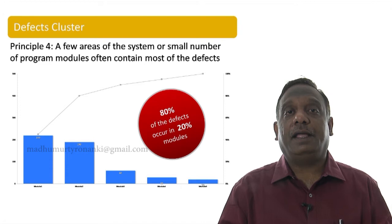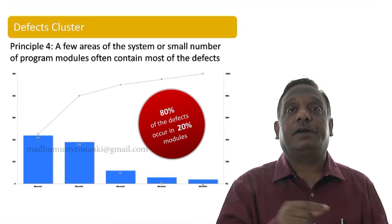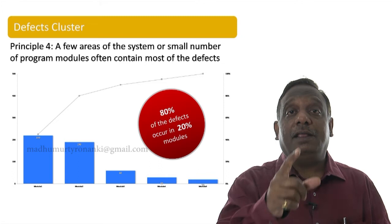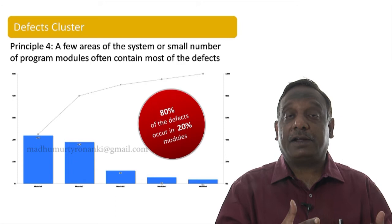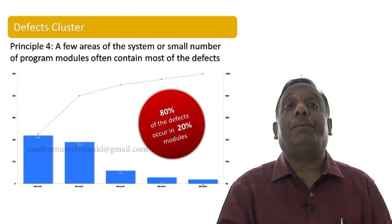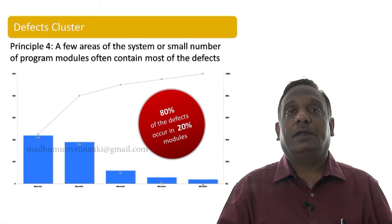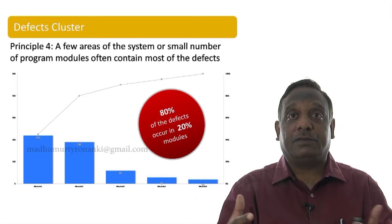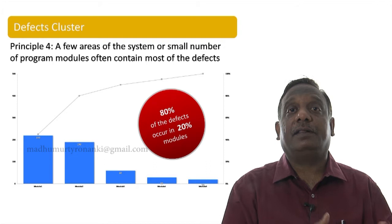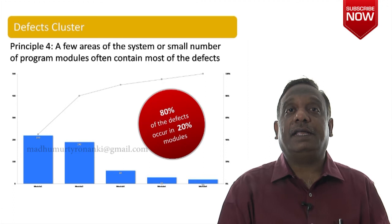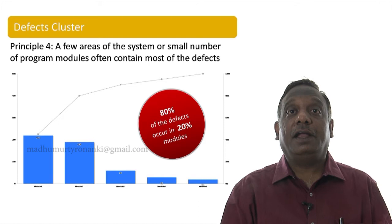If you understand this principle clearly, you will put more effort on module 1 and module 2, because 80 percent of defects occurred there. The reason relates to complexity: in software with 10 modules, 80 percent of the complexity is realized in 20 percent of the modules. Due to that complexity, developers make more mistakes and more defects appear. So put 80 percent of your effort on the areas where 80 percent of defects have occurred previously.